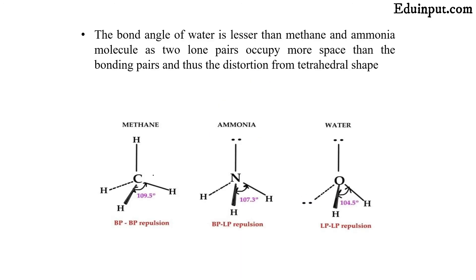You can see that going from methane to ammonia to water, the bond angle is decreasing. So students, this is all about sp3 hybridization. In the next lecture we will be discussing sp2 and sp hybridization. If you have any questions regarding this topic, let us know in the comment section and we will try to sort out your problem. See you later.